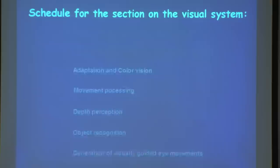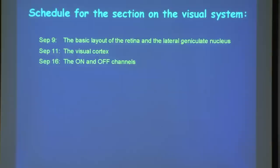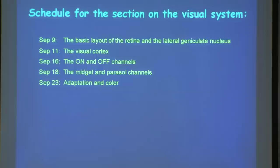During the next lecture on September 9, we are going to look at the basic layout of the retina and the lateral geniculate system, as well as how the visual system is wired. Then on September 11 we'll look at the visual cortex, the on and off channels, and the midget and parasol channels that originate in the retina — we'll discuss why they evolved and their role in seeing the world realistically.